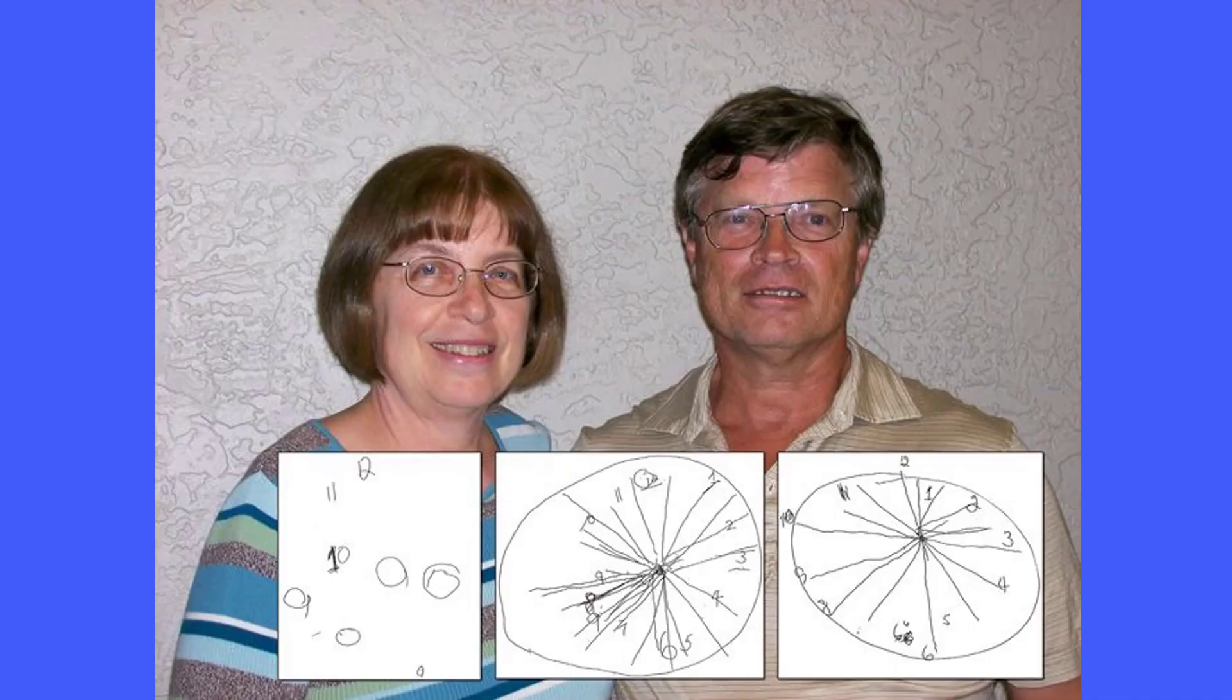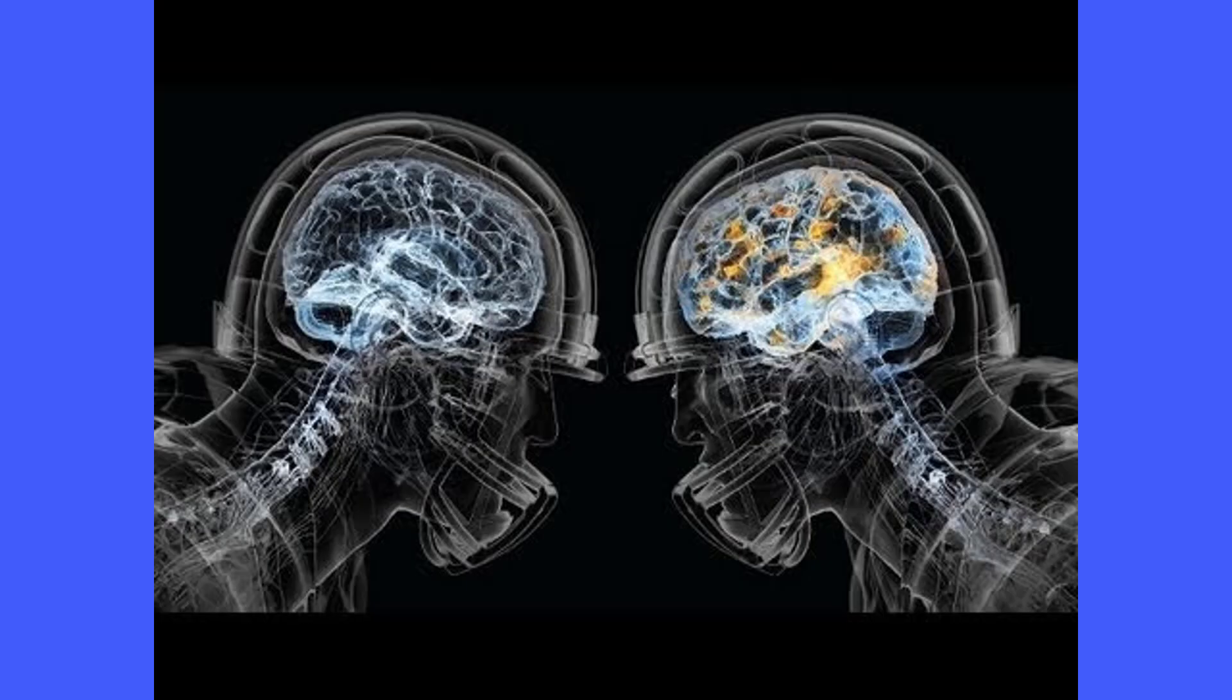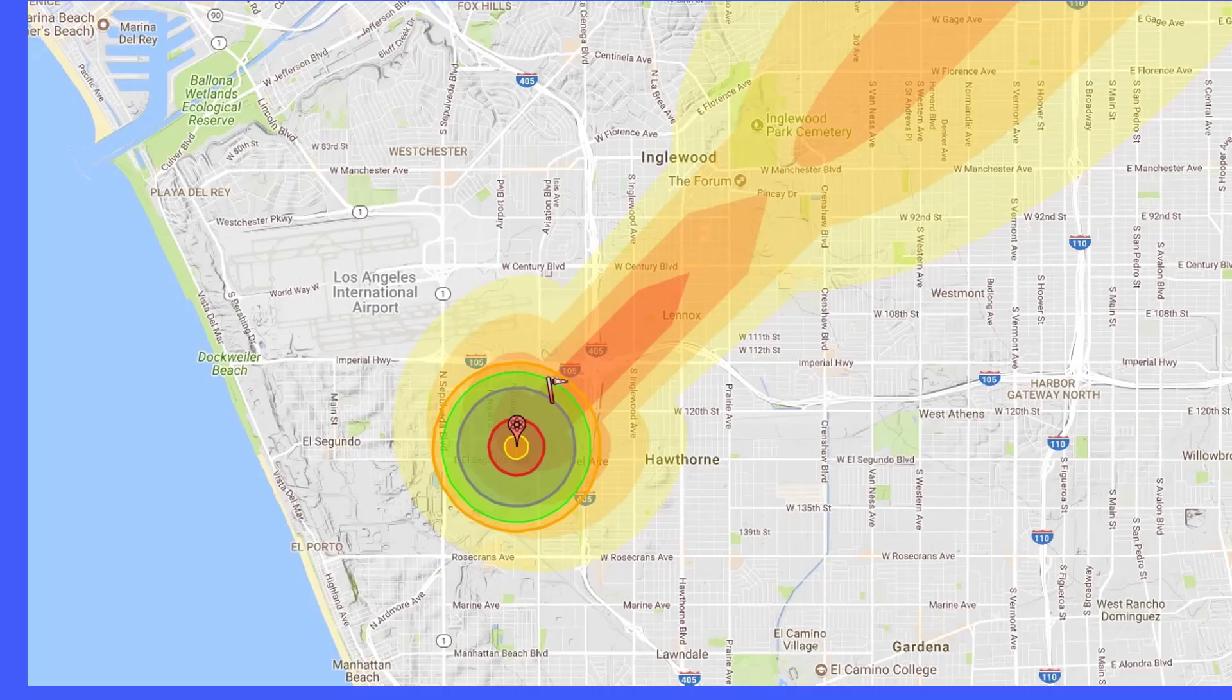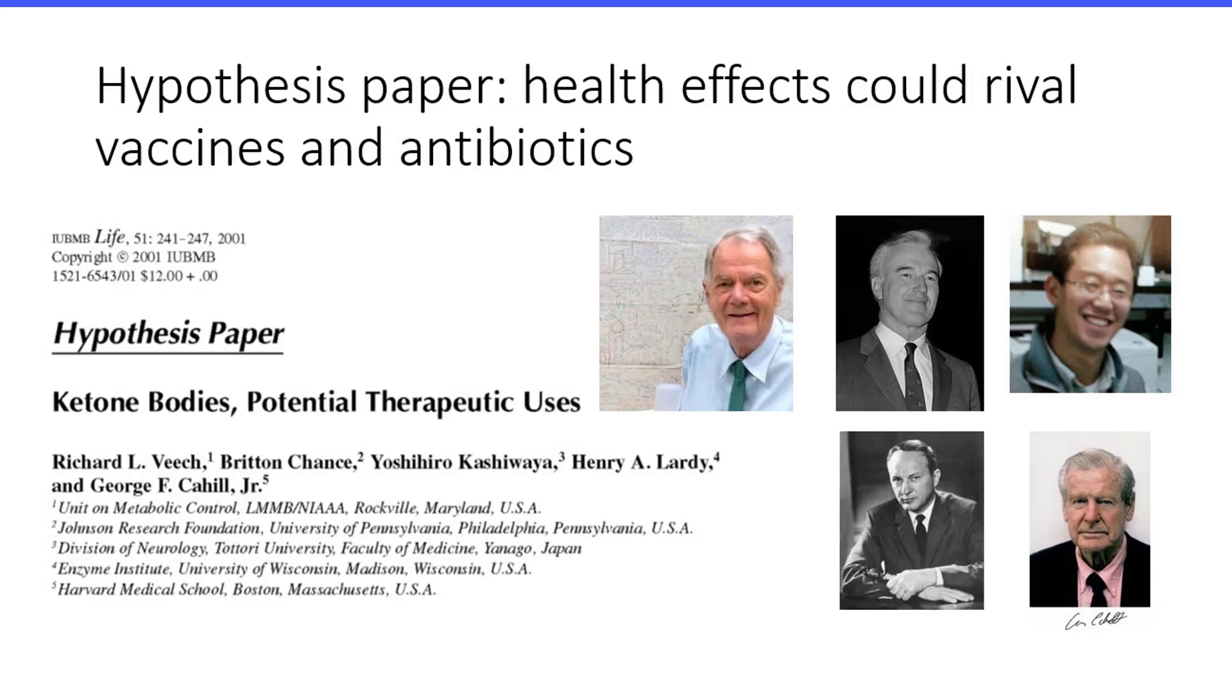From this he hypothesized that ketones would be effective in treating Alzheimer's disease, Parkinson's disease, traumatic brain injury, cardiovascular disease, and diabetes, as well as offer protection from ionizing radiation. He basically said D-beta-hydroxybutyrate could treat all these diseases effectively.